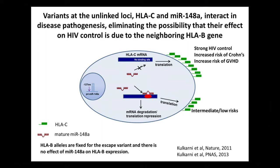We started looking at promoter variants and 3-prime UTR variants, and I'm going to give you a summary of what Smitha Kolkerny identified. In the 3-prime UTR of HLA-C, some alleles of HLA-C have a binding site for a microRNA. MicroRNAs are known to downregulate expression of certain messenger RNAs, either by degradation or decreasing their translation. What Smitha found was that some alleles have a mutation in that microRNA binding site, whereas other ones have the appropriate binding site for this microRNA.